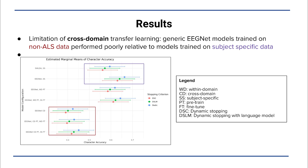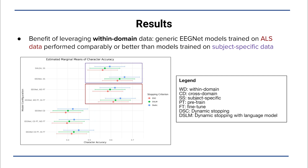When looking at character accuracy, generic EEGNet models trained on data from individuals without ALS performed poorly compared to models trained on subject-specific data, highlighting a limitation of cross-domain transfer learning.